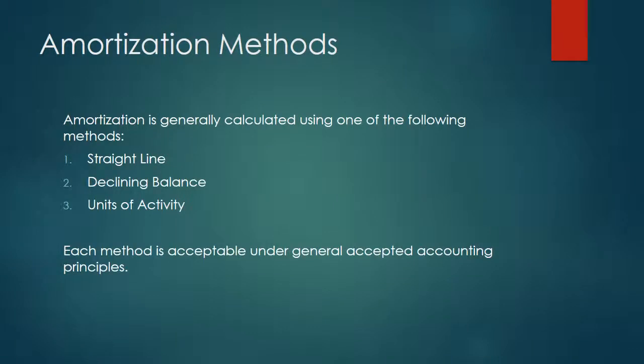There are three methods used to calculate amortization: the straight line method, declining balance, and units of activity. All three methods are accepted by GAAP.